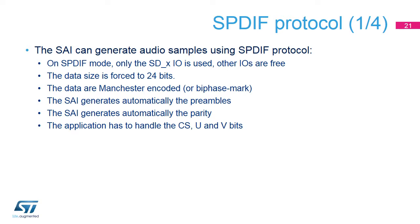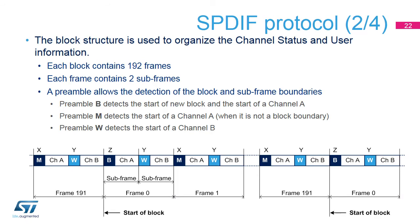The SAI supports the Audio IEC 60958 standard in transmit mode when configured for the SPDIF protocol. The SAI generates the preambles and the parity bit according to the transmitted data. The software has to handle the CS, U, and V bits. In the IEC 60958 specifications, the block structure is used to decode the channel status, or CS, and user information, or U. Each block contains 192 frames. Each frame contains two subframes. The SAI automatically generates the B, M, and W preambles. Preamble B detects the start of a new block and the start of a channel A. Preamble M detects the start of a channel A when it is not a block boundary. And preamble W detects the start of a channel B.